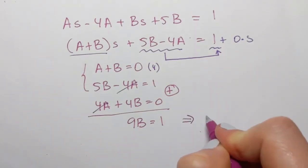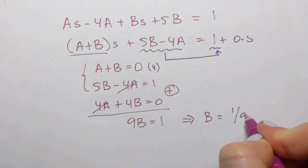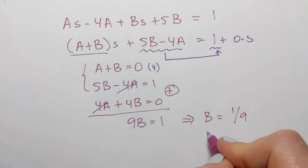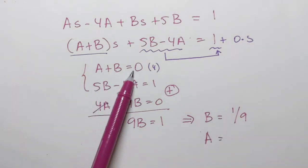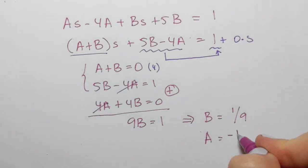So from here, b equals 1 over 9. And then a, if a plus b is 0, it means that a is negative 1 over 9.